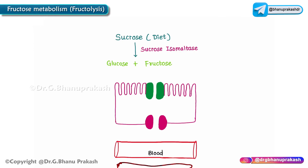Today let's discuss the metabolism of fructose, specifically fructolysis. Sucrose is taken in the diet, and at the intestinal epithelial cell border we have an enzyme called sucrase-isomaltase. This enzyme cleaves sucrose into glucose plus fructose. We will focus on the fate of fructose, leaving glucose discussion for later.